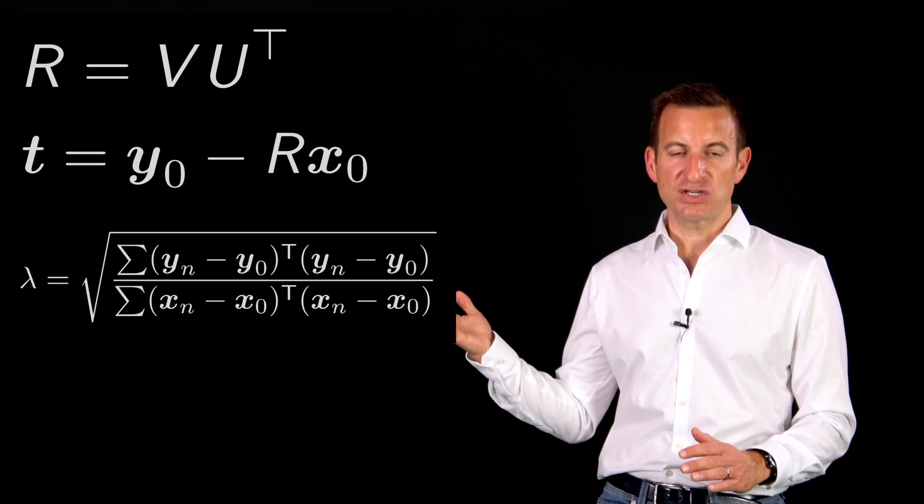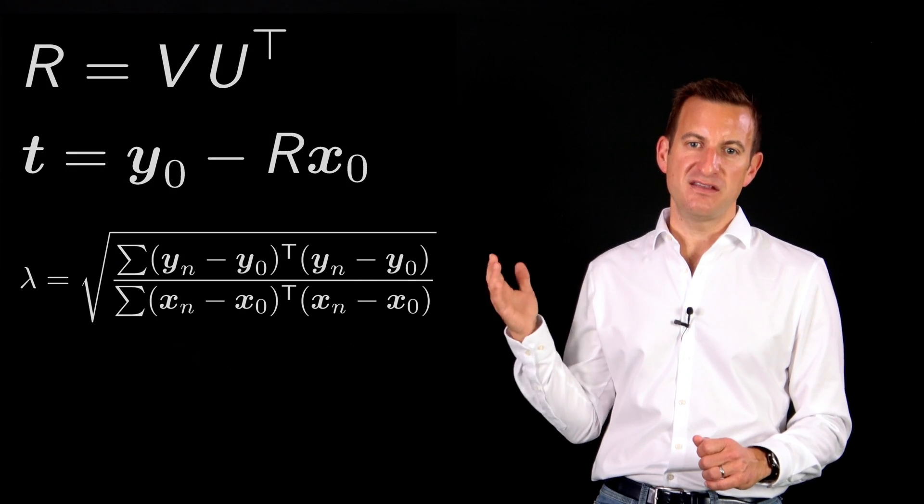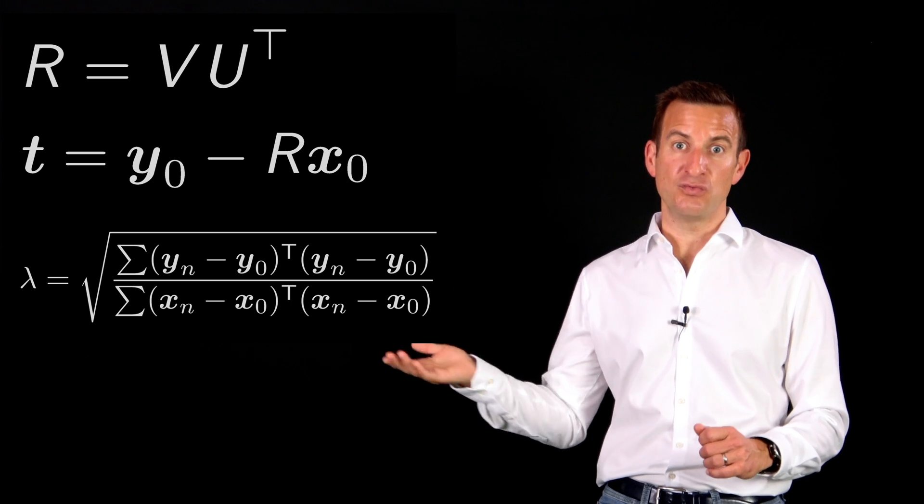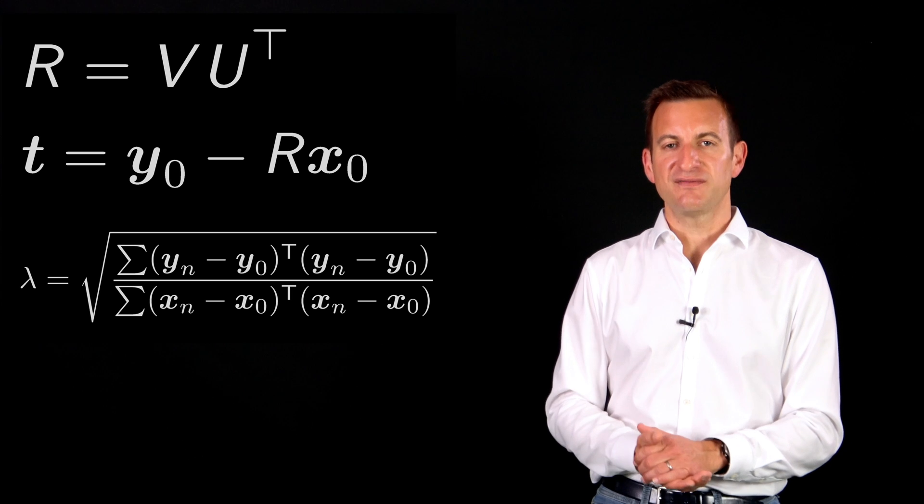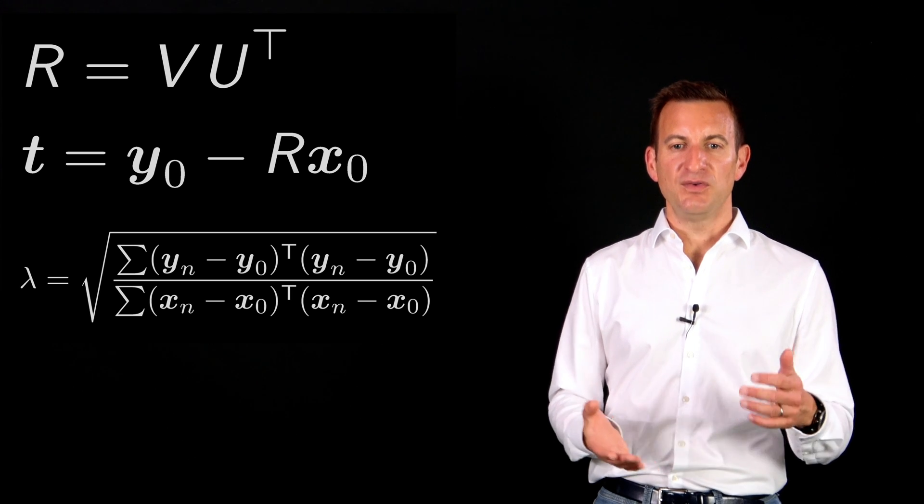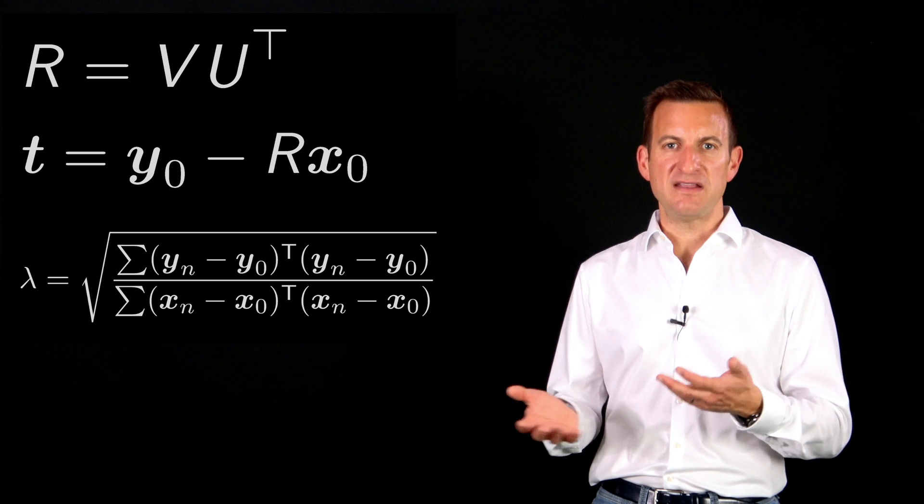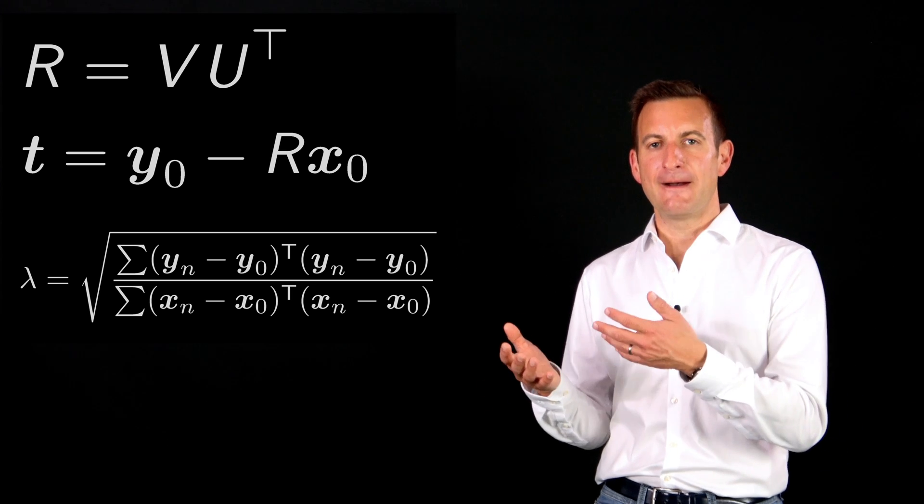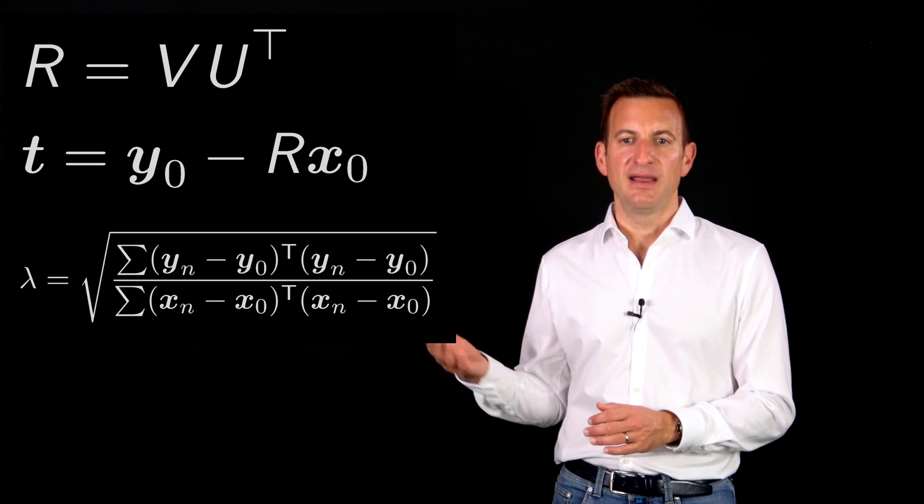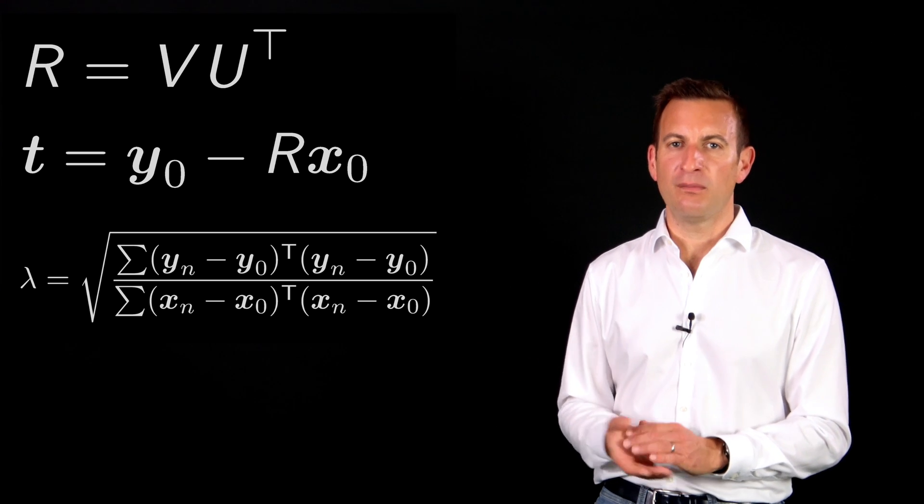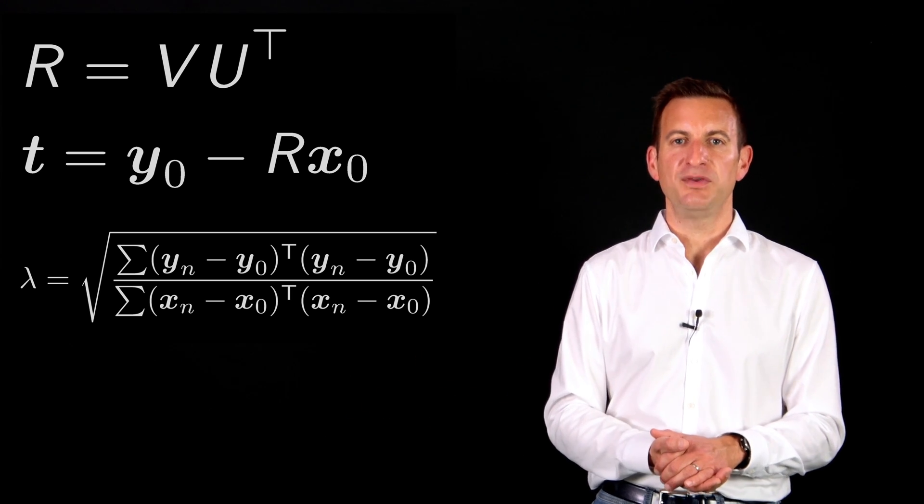So we can compute the rotation matrix, R as V times U transpose, where V and U are two matrices from the singular value decomposition. We can compute the translation vector, which basically uses X0 and Y0, which are the weighted means or the center of masses of my two point sets, and the rotation matrix that I just computed before. And also the scale parameter looks fairly complex, but it's very simple to compute just using this expression over here.